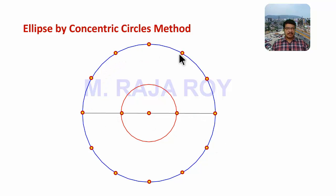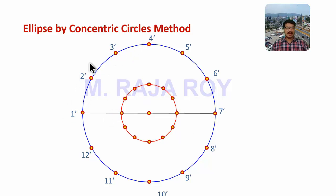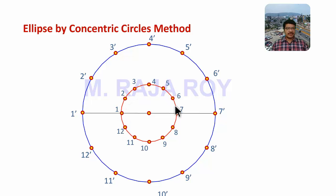Divide the major axis circle into 12 equal parts and divide the minor axis circle into the same 12 equal parts. Give the numbering — for the outer circle label the divisions as 1 dash, 2 dash, 3 dash, 4 dash, and so on up to 12 dash. The direction is your choice, but follow the same direction for both circles. Here I am taking the clockwise direction. For the inner circle, give numbering 1, 2, 3, 4, and so on up to 12 with corresponding numbering.